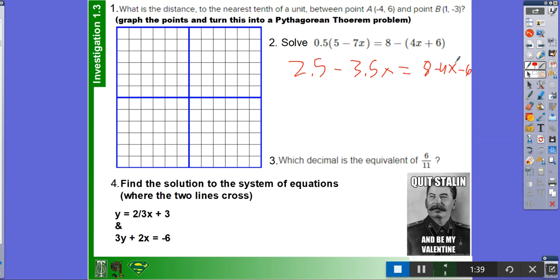Okay. Then what you want to do is you want to add that 4x. Plus 0.5x is equal to 8 minus 6.